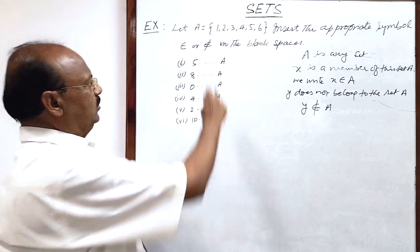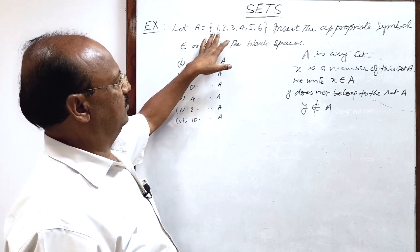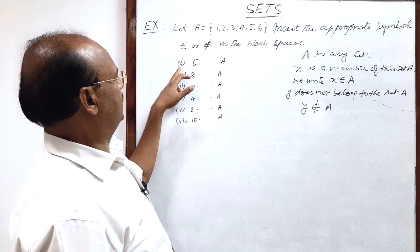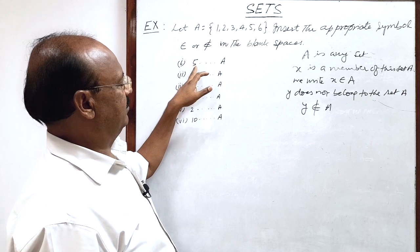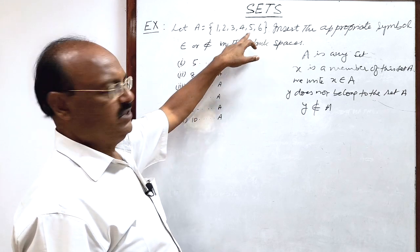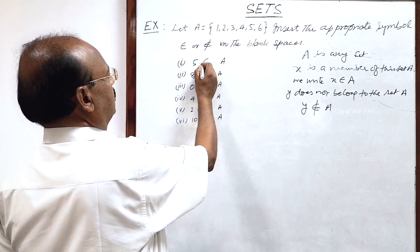As for example, you see this question. Here this set A consists of the elements natural numbers 1, 2, 3, 4, 5, 6. And here first question is 5. We have to decide whether 5 is belonging to set A or not. 5 is here. So 5 is belonging to set A. So we will use this notation. Very simple.